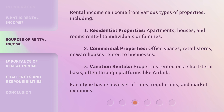Rental income can come from various types of properties, including: 1. Residential properties — apartments, houses, and rooms rented to individuals or families. 2. Commercial properties — office spaces, retail stores, or warehouses rented to businesses. 3. Vacation rentals — properties rented on a short-term basis, often through platforms like Airbnb. Each type has its own set of rules, regulations, and market dynamics.